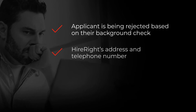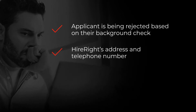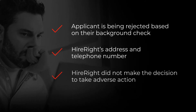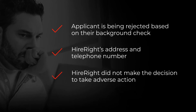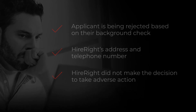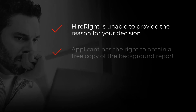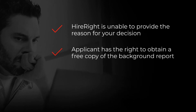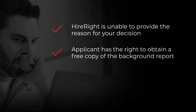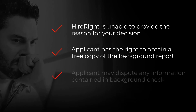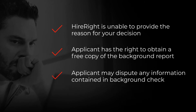The adverse action notice must include HIRITE's address and telephone number, a statement that HIRITE did not make the decision to take adverse action and is unable to provide the reason for your decision, and the applicant's right to obtain a free copy of the background report from HIRITE and to dispute any information contained in it with HIRITE.